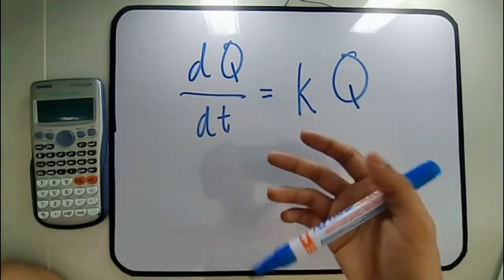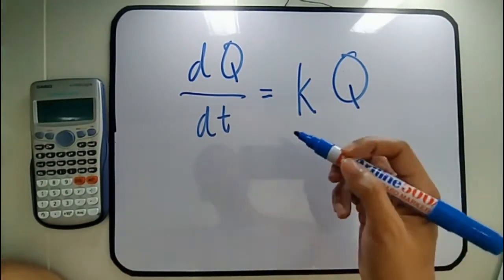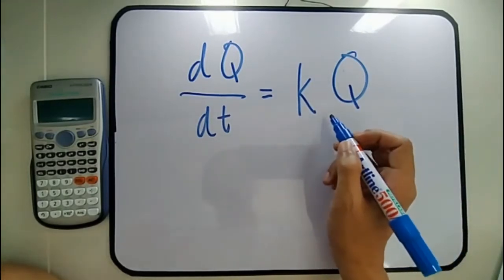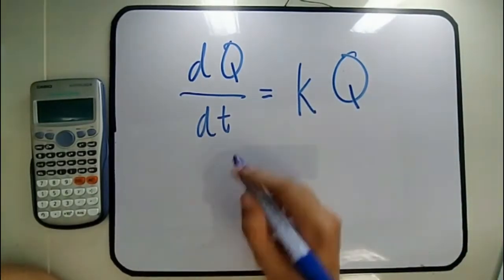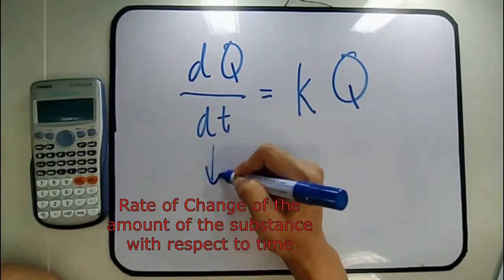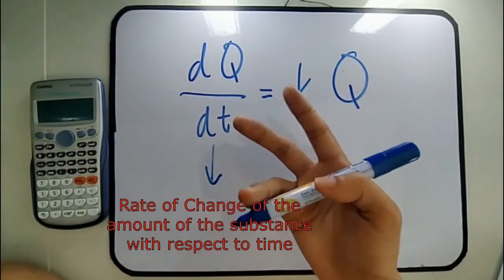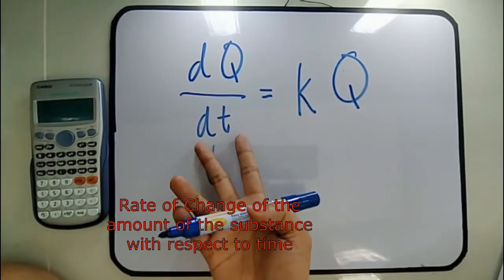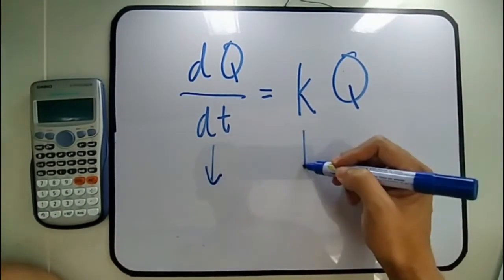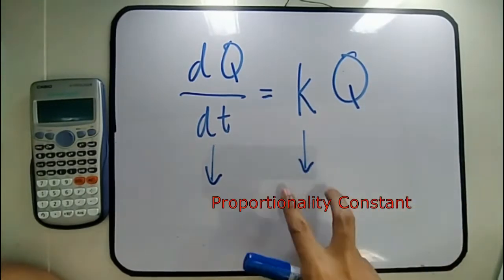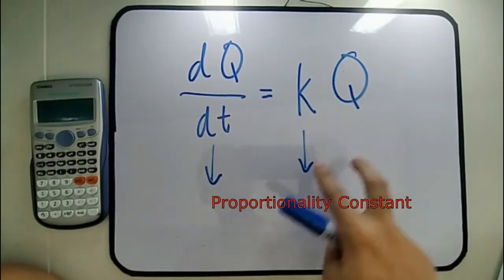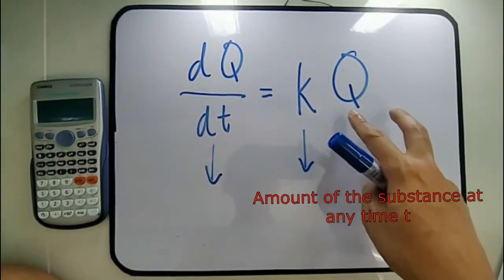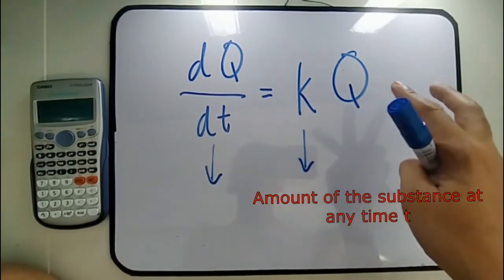In proportionality problems, you need to introduce a proportionality constant. This expression is the rate of change of the amount of the substance with respect to time. K is the proportionality constant and Q is the amount of the substance at any time T.